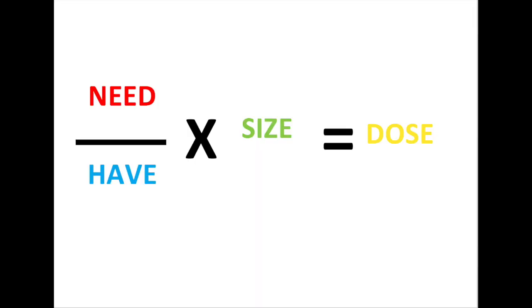In this video, I'm going to teach you how to use the NHS method to work out any drug calculation. So what is the NHS method? I've only recently learnt it but it's the best equation I've found. NHS stands for Need, Have, and Size. You divide what you need by what you have and then multiply it by the size it comes in. Sounds a bit confusing at first, but once you've done it once, you've done it a hundred times.